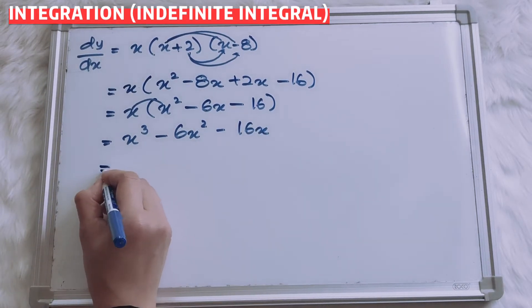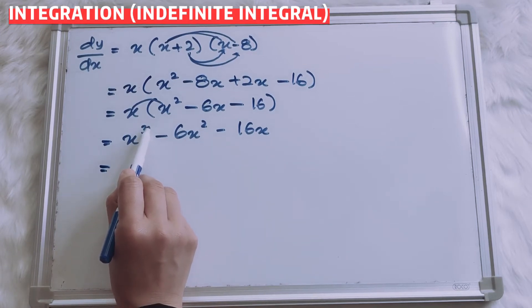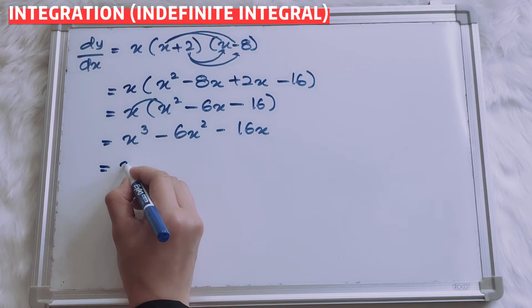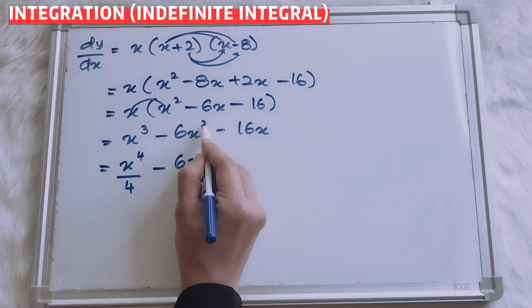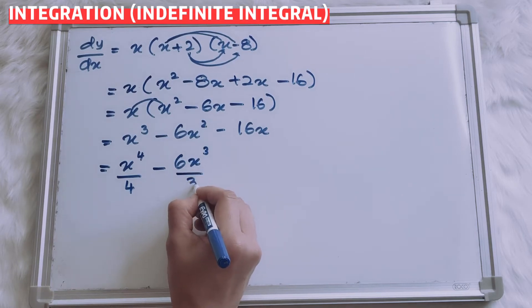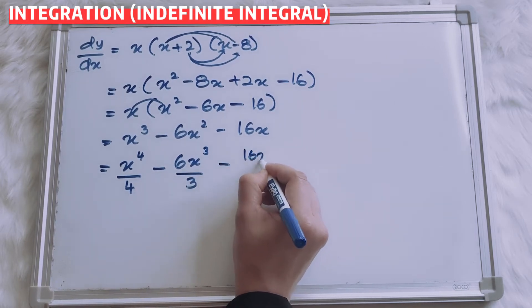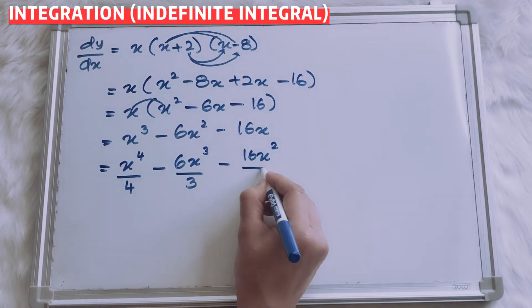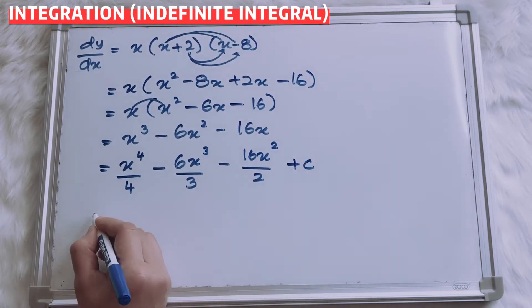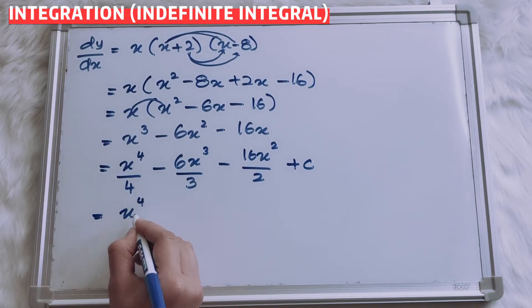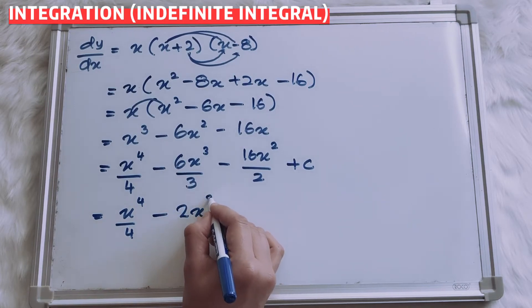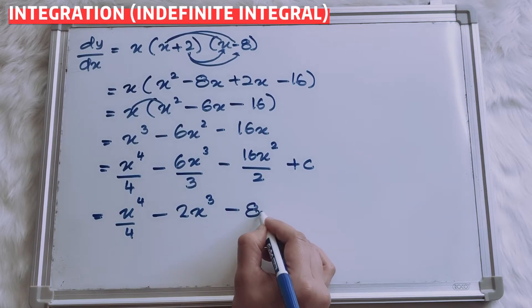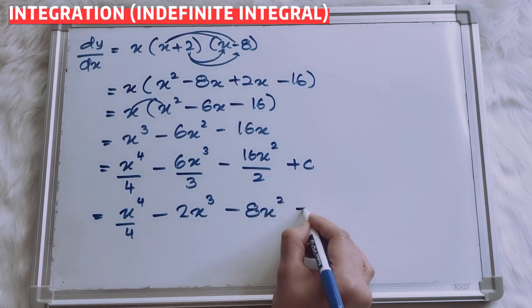Now we integrate. Add 1 to each power: x to the power of 3 plus 1 is 4, so x to the power of 4 over 4. Minus 6x to the power of 2 plus 1 is 3, over 3. Minus 16x to the power of 1 plus 1 is 2, over 2. Plus C. Simplify: x to the power of 4 over 4, minus 2x cubed, minus 8x squared, plus C.